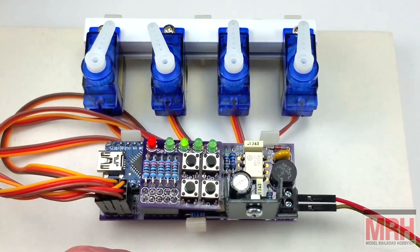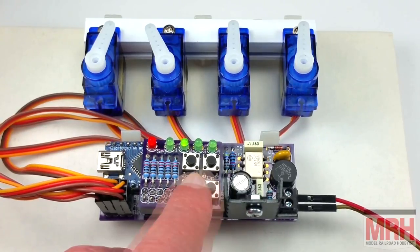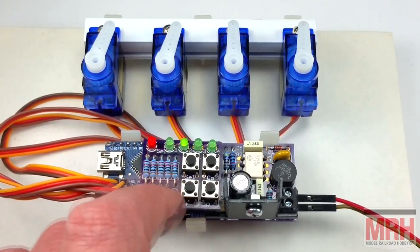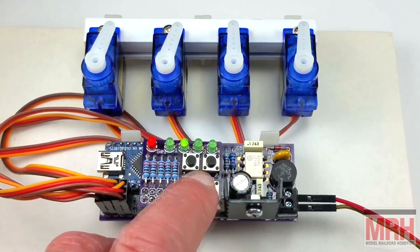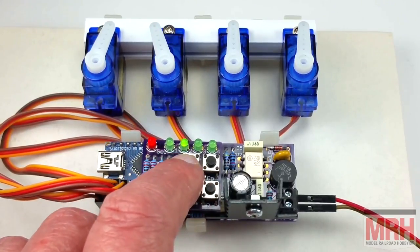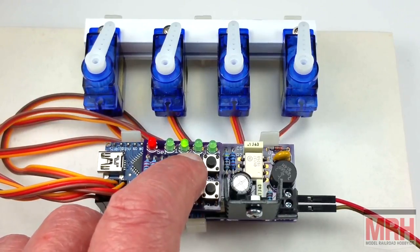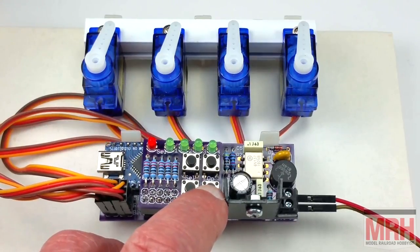Move on to servo 2 and we can adjust its maximum left position again by pressing the left and right buttons. Press select to adjust the rightmost position. Again when you're happy, press select again. Look at the rate. That looks ok. Press select. Press right to retain the settings.